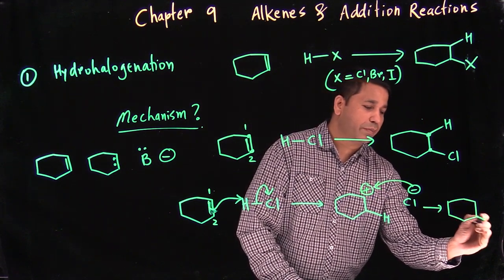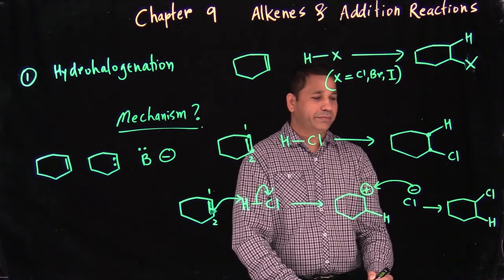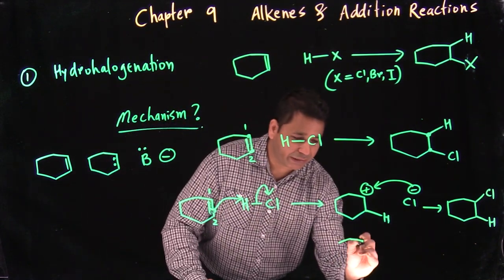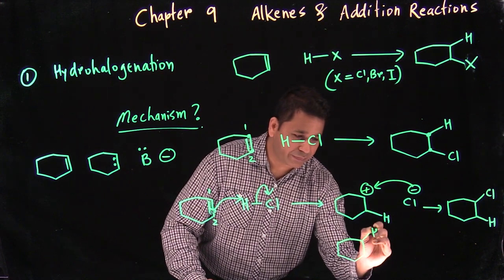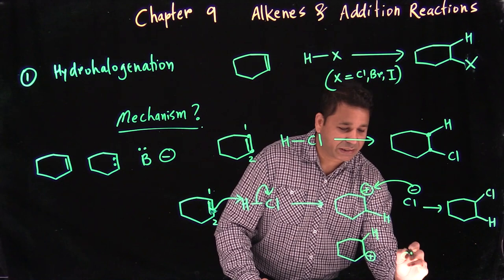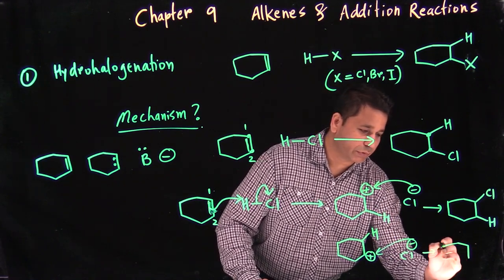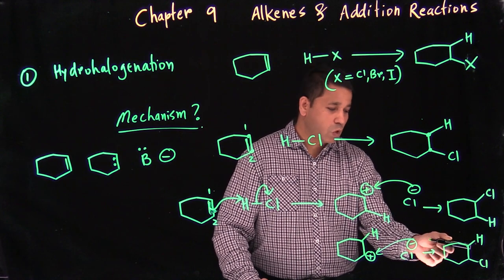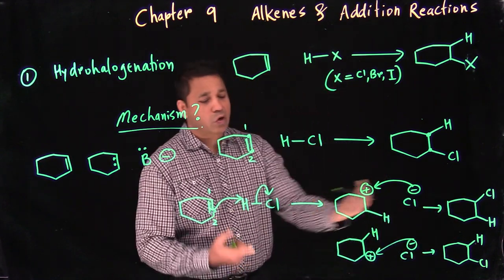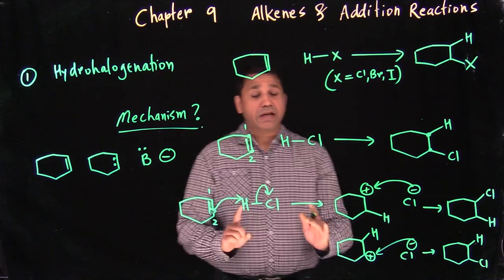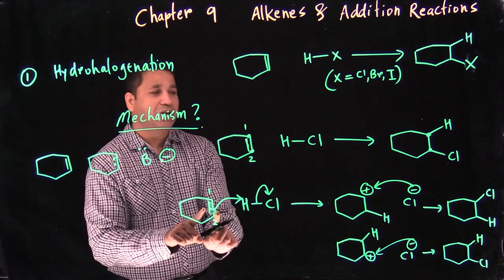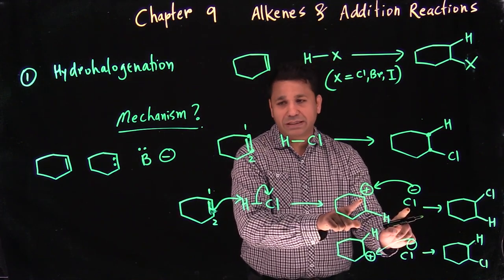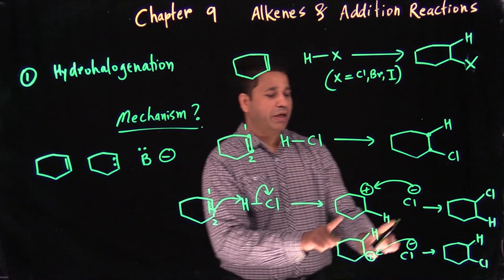In step two, carbon-1 (the carbocation) and Cl⁻ come together to form the bond, giving you the product with H and Cl added. Both carbons are the same in this symmetric example, so it doesn't matter which carbon gets the H. This is both a Brønsted acid-base reaction and a Lewis acid-base reaction, combined to give the product.